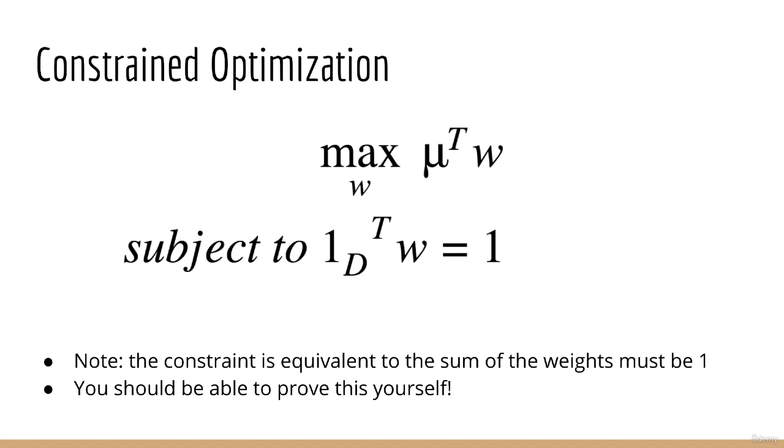We can state our problem as follows. We want to maximize mu transpose w with respect to mu. This is subject to the constraint that the one vector dotted with w is equal to one. Note that this is just a fancy way of saying that the sum of all the elements of w must equal one. In optimization, we like to represent every equality and inequality in terms of vectors and matrices, since that's eventually what we need to put into the code.